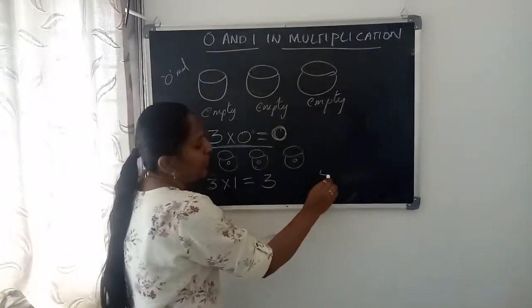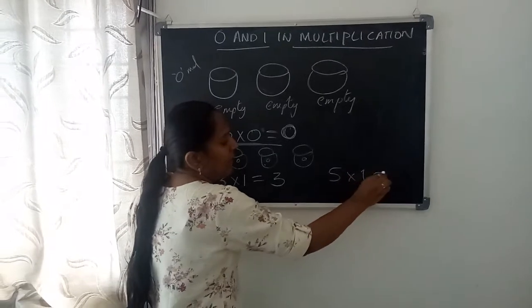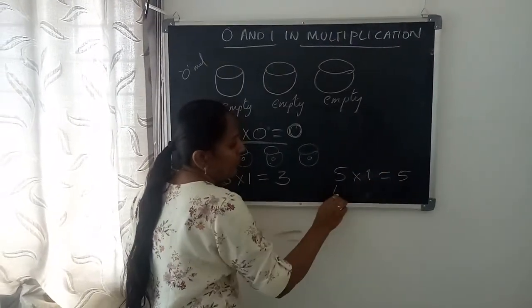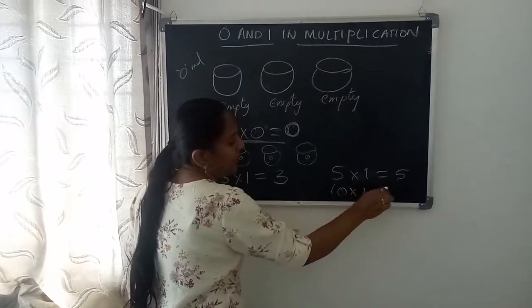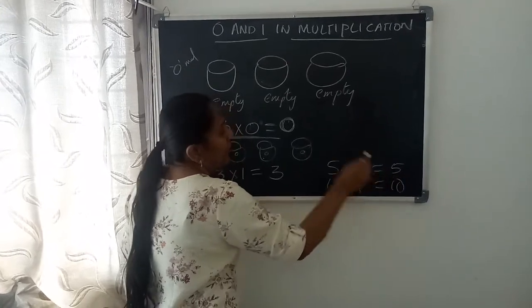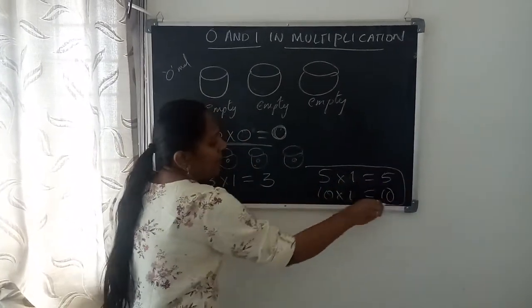One more example: if you multiply five with one, five ones are five. If you multiply ten with one, ten ones are ten. Okay, this is one multiplication.